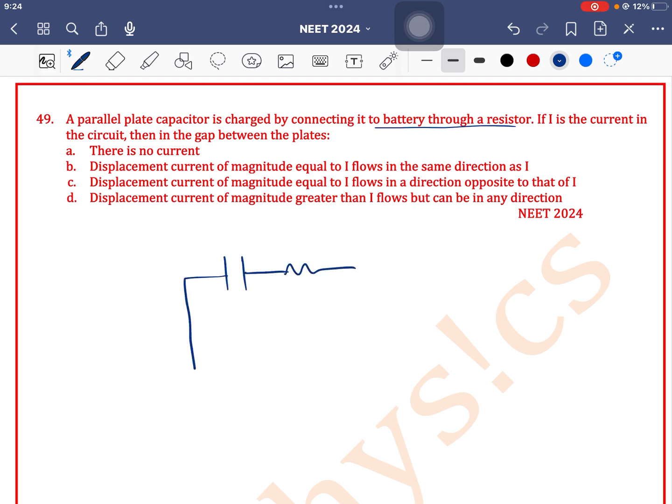If I is the current in the circuit, then in the gap between the plates, there is no conduction current but displacement current.